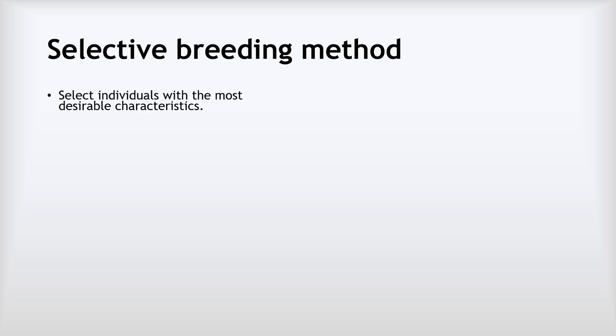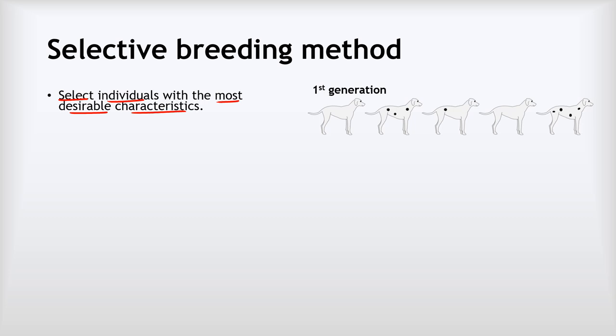Let's look at the method for how selective breeding works. The first step is to select the individuals with the most desirable characteristics. What we mean by most desirable varies depending on what we're trying to achieve — maybe improving yield, making something tastier, or making it grow faster. In this example, we're going to try to produce some spotty dogs from an initial generation of dogs that are quite unspotty. Our most desirable characteristic in this case is being the spottiest.